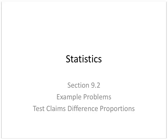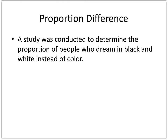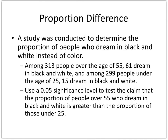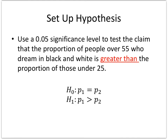Let's look at an example of testing claims about proportions. A study was conducted to determine the proportion of people who dream in black and white. We have two samples here: among 313 people over the age of 55, 61 dreamed in black and white, and among 299 people under the age of 25, 15 dreamed in black and white. We'll use a 0.05 significance level to test the claim that the proportion of people over 55 who dream in black and white is greater than the proportion of those under 25.